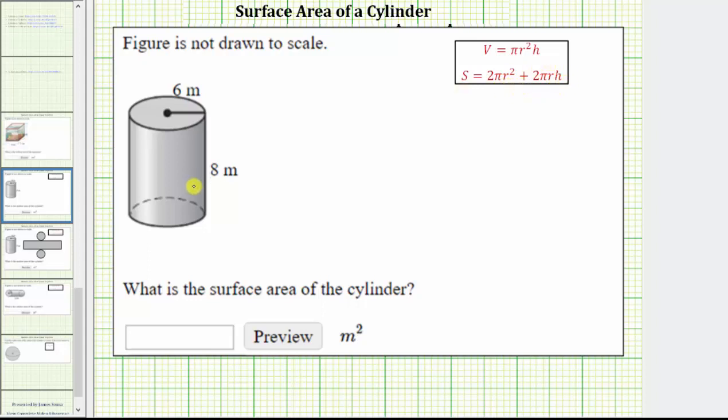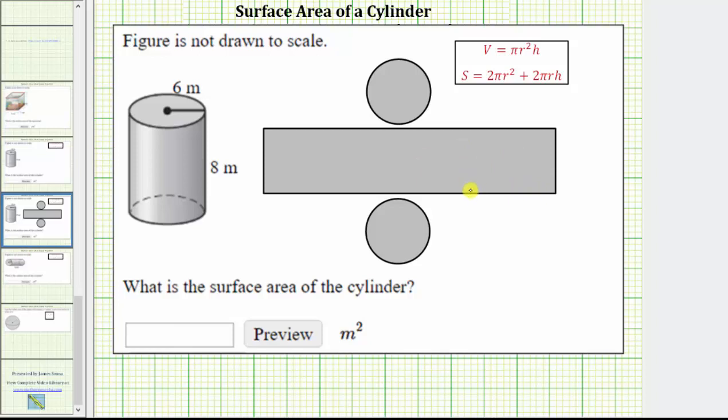Before we find the surface area though, let's talk about where this formula comes from. If we take the top and bottom off of the cylinder, those would be circles, and then if we cut the side and roll it, it would give us a long rectangle as we see here. So here we have the top, the bottom, and the side of the cylinder.